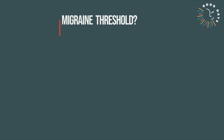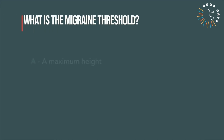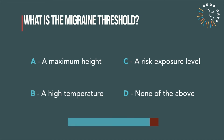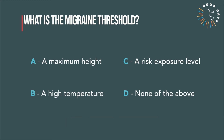Let's do a quiz. First question: what is the migraine threshold? Answer A: a maximum height. Answer B: a high temperature. Answer C: a risk exposure level. Answer D: none of the other. If you answered C, congratulations — the risk meter is measuring risk, and the threshold is the highest dash on the risk meter, so it is a risk level. If you gave any other answer, you get an upset brain receptor badge.